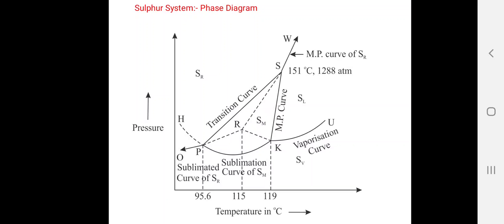Regarding triple points in the diagram, there are three stable triple points: P, K, and S. There is only one metastable triple point, that is R.